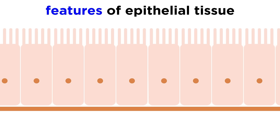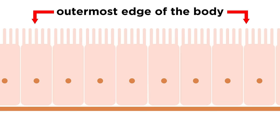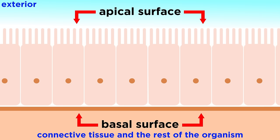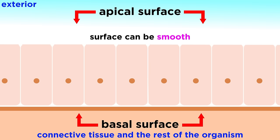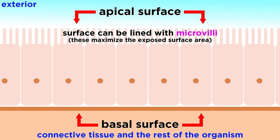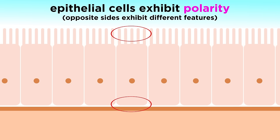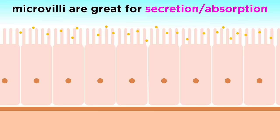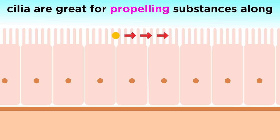Let's describe the key features of epithelial tissue. Since we are talking about cells that line the exterior of the body or a cavity, we should distinguish between the apical surface, or the surface exposed to the exterior, and the basal surface, which is attached to some connective tissue within the rest of the organism. The apical surface is sometimes smooth, but it is often lined with microvilli, which are tiny projections of the plasma membrane meant to maximize the exposed surface area. Because the two opposite sides of the cell have different features, we say that epithelial cells exhibit polarity. Microvilli enhance certain cells' ability to either secrete or absorb substances, while other cells may have cilia lining the apical surface, which are hair-like structures that propel substances along.